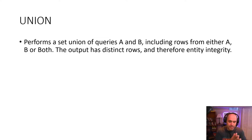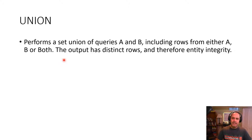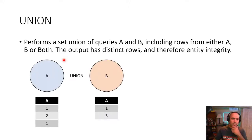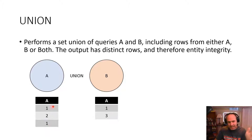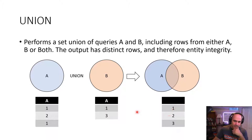Let's move on and look at the UNION operator. The UNION operator performs a true set union of queries A and B — that means you will grab rows from either A or B or both, and the output is only going to have distinct rows, and therefore the output will have entity integrity. For example, table A has rows one, two, and one — no entity integrity — and table B has rows one and three. When you UNION these two tables together, you get a combined output of distinct values: one, two, and three. The duplicate 'one' does not repeat.